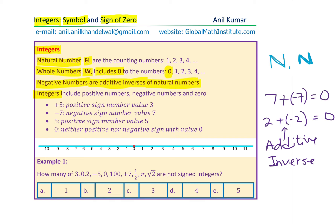To which set do these belong? They belong to integers. The set of integers includes the positive natural numbers 1, 2, 3, 4 and so on, includes 0, and also the negative numbers — which are the additive inverse of the natural numbers. On a number line, the natural numbers 1, 2, 3, 4... are on the right side of the origin. When we include 0 it becomes the whole numbers. We also include the negative numbers on the left, which when added to the natural numbers result in 0. When we talk about integers, we include positive numbers, negative numbers, and 0.